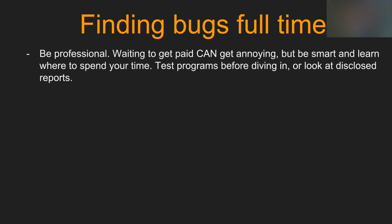On BugCrowd, since they are managed programs, you don't have to wait long to have your bug triaged and paid out. HackerOne and Synack also have managed programs. Be smart: learn where you're reporting, manage your time correctly, and look at disclosed reports. HackerOne disclosed reports show timelines for how quickly bugs were fixed and paid. See where people are getting paid within 24 hours or a week, and whether payouts are fair — for example, if they're getting $50 for RCE, your XSS will probably get very little.